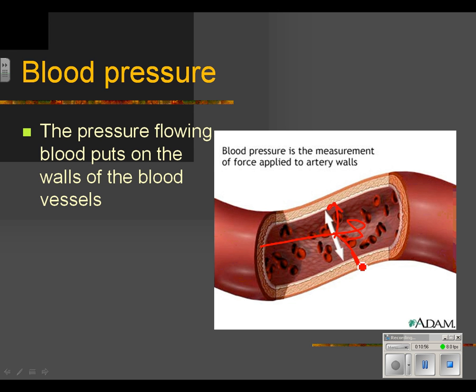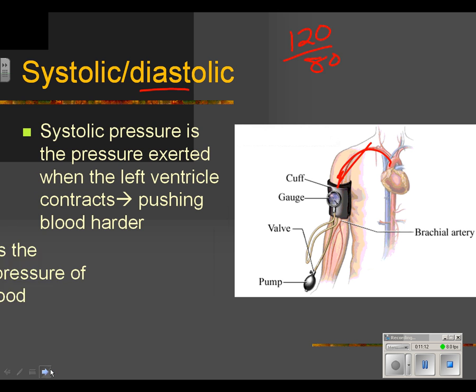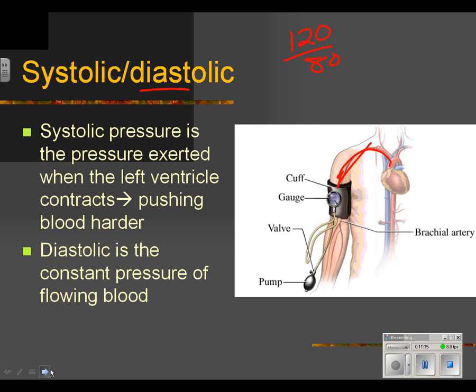You know about faster-flowing things putting more pressure on you if you've ever stood in a fast-flowing stream versus a slow-flowing stream — a fast-flowing stream can knock you off your feet. Diastolic pressure is the constant pressure of blood that's always flowing, even between heartbeats. In class, we'll discuss how to measure systolic and diastolic pressure. That's a discussion of the anatomy of the circulatory system.